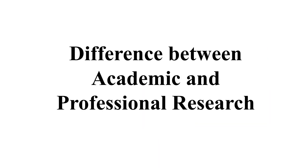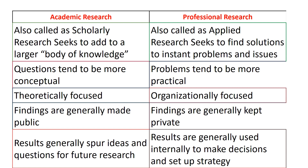Now let's discuss the differences between academic and professional research. Academic research, also called scholarly research, seeks to add to a larger body of knowledge — that is, the creation of a body of knowledge. Professional research, also known as applied research, seeks to find solutions to immediate problems and issues.